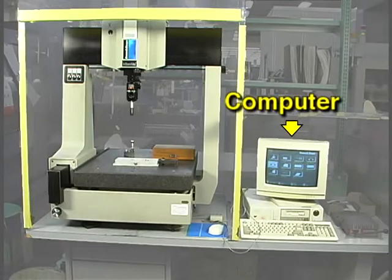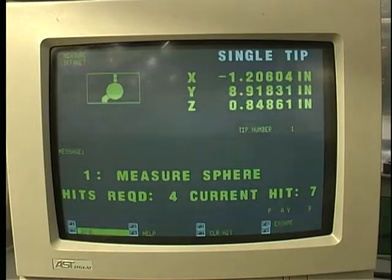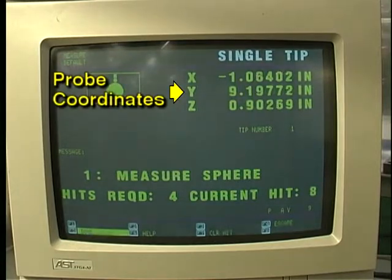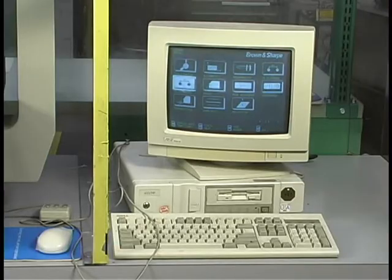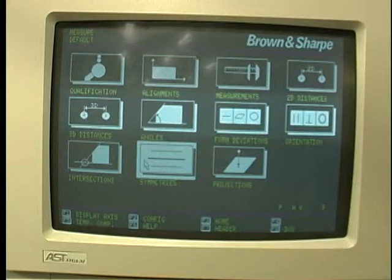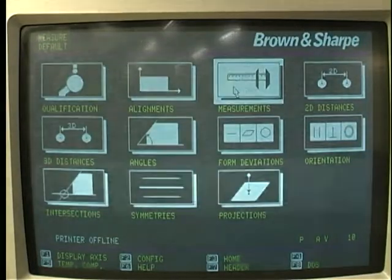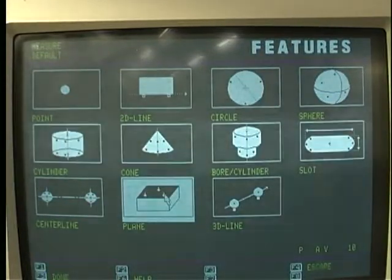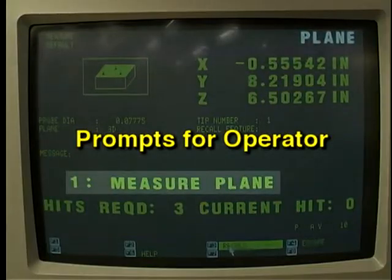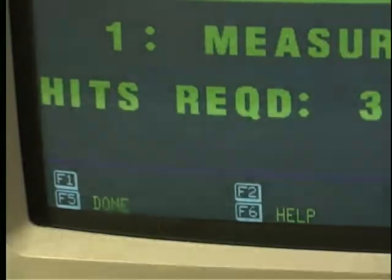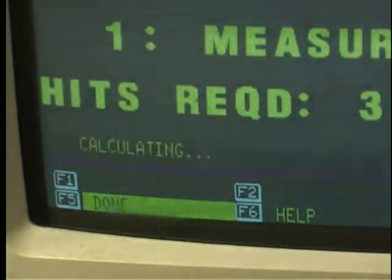This CMM has a computer connected to it. As the probe is moved, the coordinates of the probe tip are displayed by the computer. The computer is a normal PC which is using special software designed for use with this CMM and probe. The software includes a series of measuring procedures indicated by icons on the screen. Once a procedure is selected by clicking on an icon, the software will prompt the operator to perform each step required to complete the measurement procedure. The computer will then store all the measurements and calculate various values when needed.